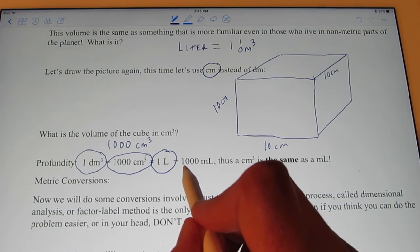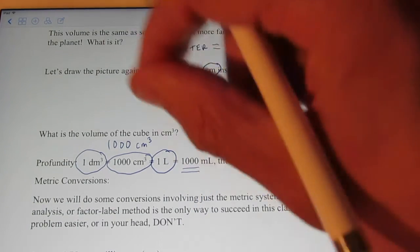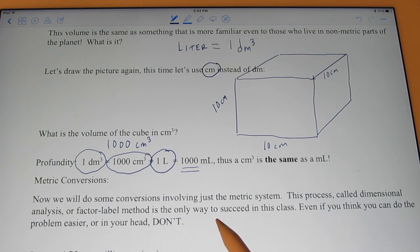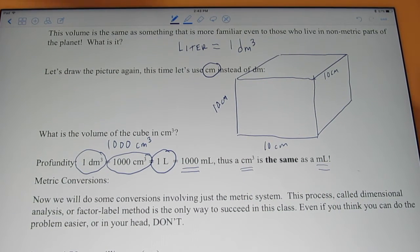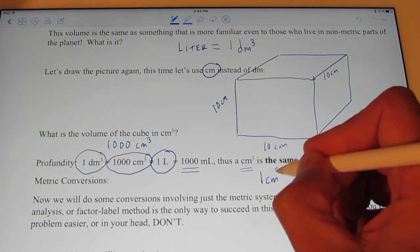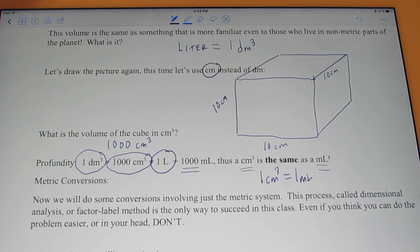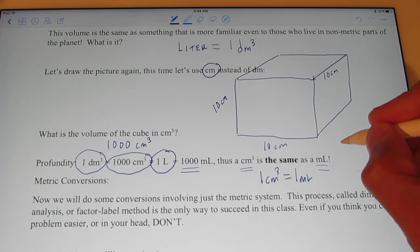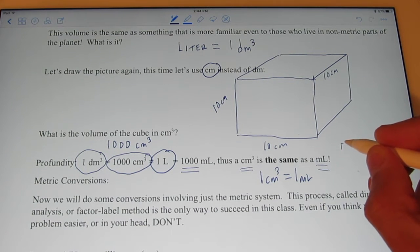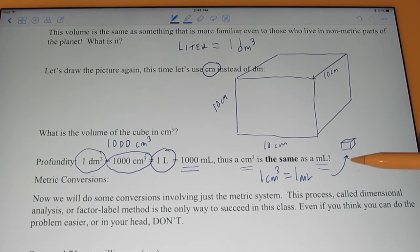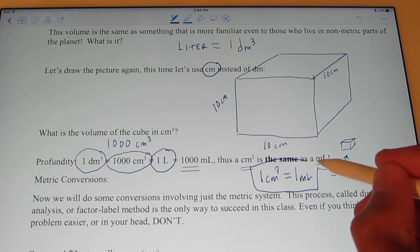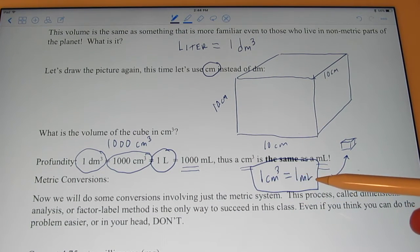So, what I'm trying to tell you is that a cubic decimeter is the same as 1000 cubic centimeters, which we also said is the same as one liter. Now, one liter would have 1,000 milliliters. So, it turns out that a cubic centimeter is the same as a milliliter, and that is profound. One cubic centimeter is equal to one milliliter.